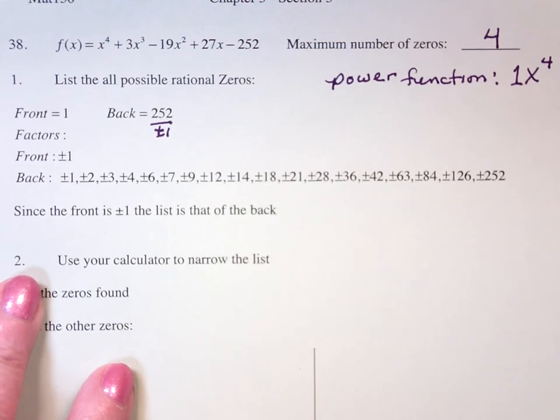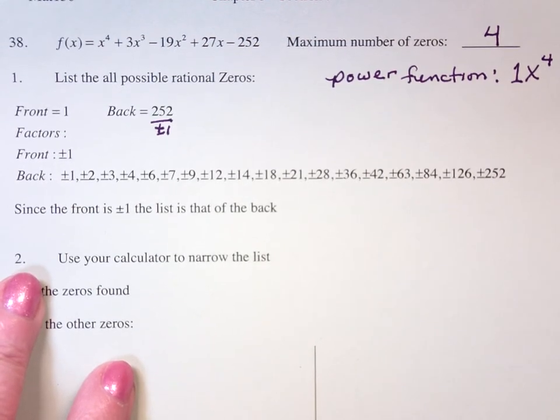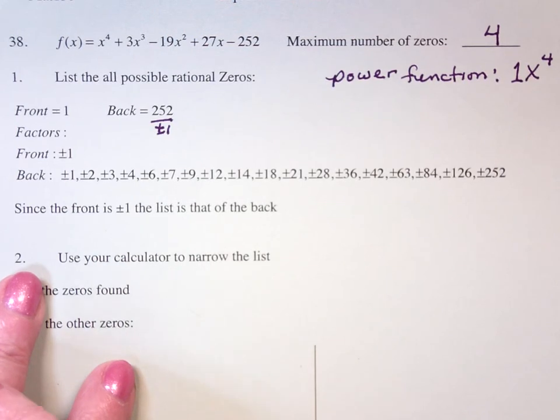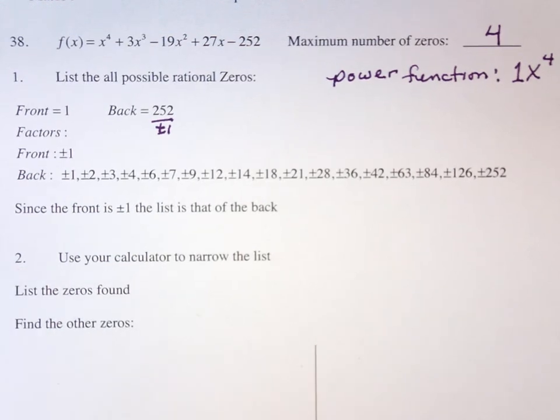Now the good news is this. I only need to find one to begin peeling the onion away of this particular problem. And if I find two, I'm home free. And you're going to say, why? Because if I have one zero, I can reduce a fourth degree polynomial down to a third degree polynomial.